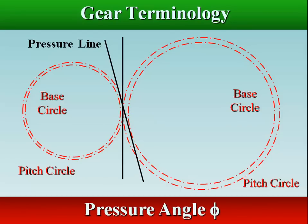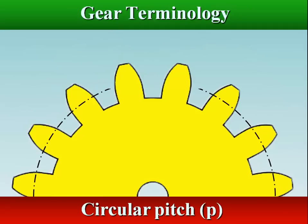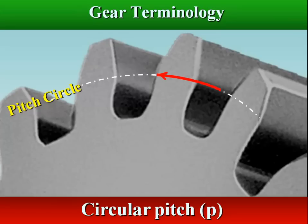Pressure angle is the angle at a pitch point between the line of pressure, which is normal to the tooth surface, and the plane tangent to the pitch surface. Circular pitch is the distance from one face of a tooth to the corresponding face of an adjacent tooth on the same gear, measured along the pitch circle.